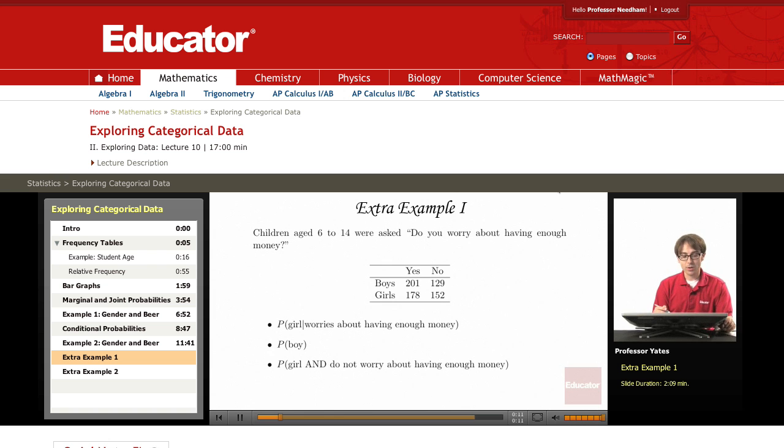In this example, we had a survey. Children aged 16 to 14 were asked, do you worry about having enough money? We classified these into boys and girls and kept track of their answers, yes or no.